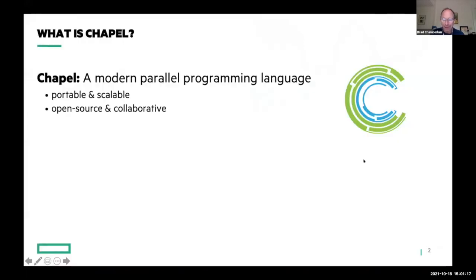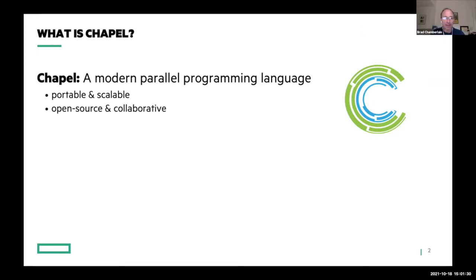What is Chapel? If you're not familiar with it, I'm not going to be able to give you a very in-depth introduction today, but you'll hopefully pick up a little bit as we go. It is a modern parallel programming language, designed to be portable and scalable. We do a lot of development on commodity laptops, and you can take those programs and run them on clusters, the cloud, or supercomputers by HPE or other vendors. It's an open source and collaborative project developed at GitHub, licensed with the Apache 2.0 license.